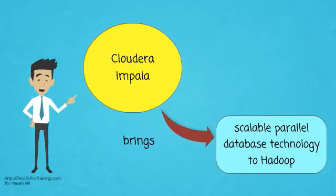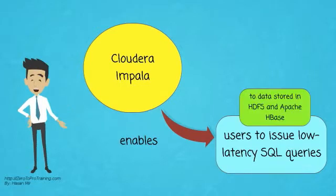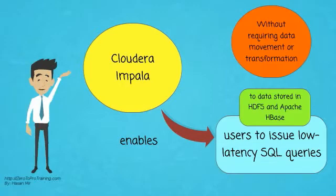The Apache licensed Impala project brings scalable parallel database technology to Hadoop. It enables users to issue low latency SQL queries to data stored in HDFS and Apache HBase, without requiring data movement or transformation.